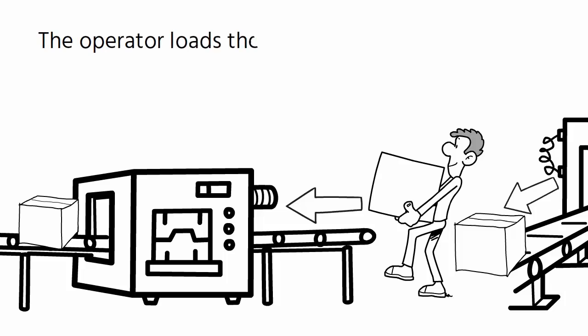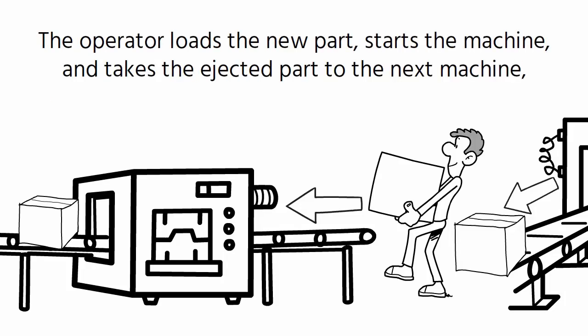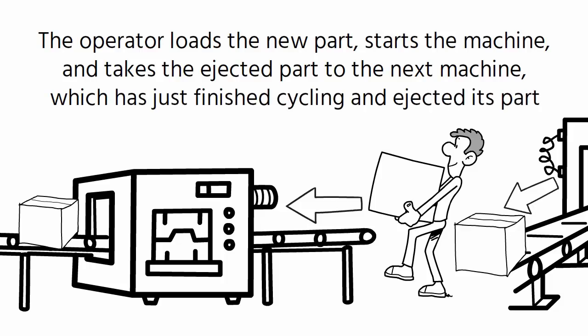The operator loads the new part, starts the machine, and takes the ejected part to the next machine, which has just finished cycling and ejected its part. This goes on and on around the cell.